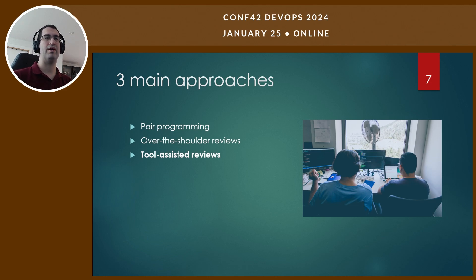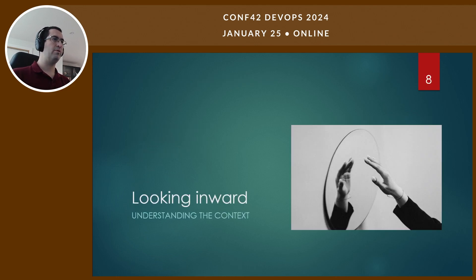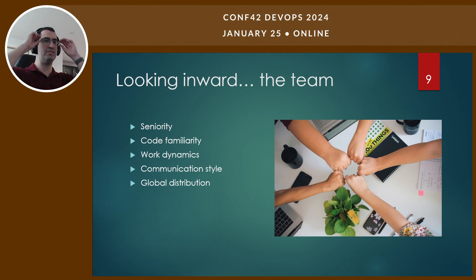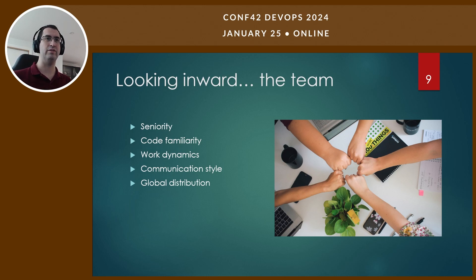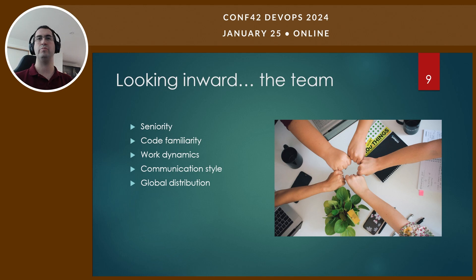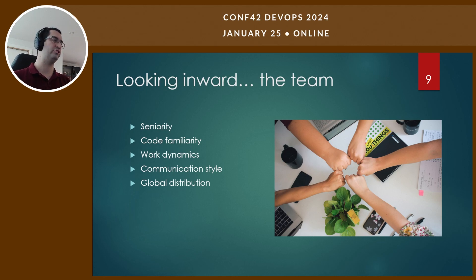Before starting code reviewing in a team, we need to understand the context. First, about the team: what's the seniority level? Is the team composed only of senior engineers who've worked in the codebase for five years, or do we have many junior engineers and new people onboarding? What's the familiarity people have with the code? What's the work dynamic — do people work more independently or collaboratively when building features? What's the communication style? What's the global distribution and time zones? There are many things to take into consideration.